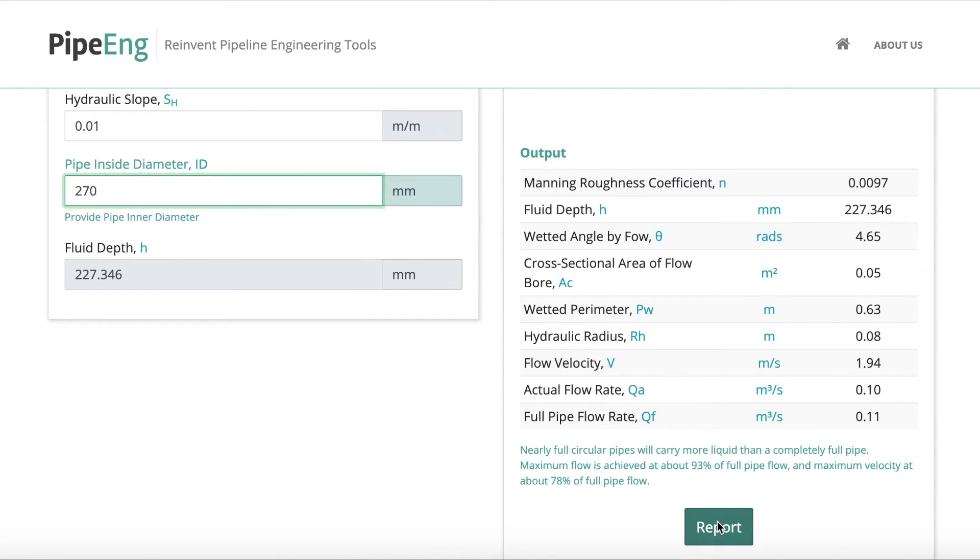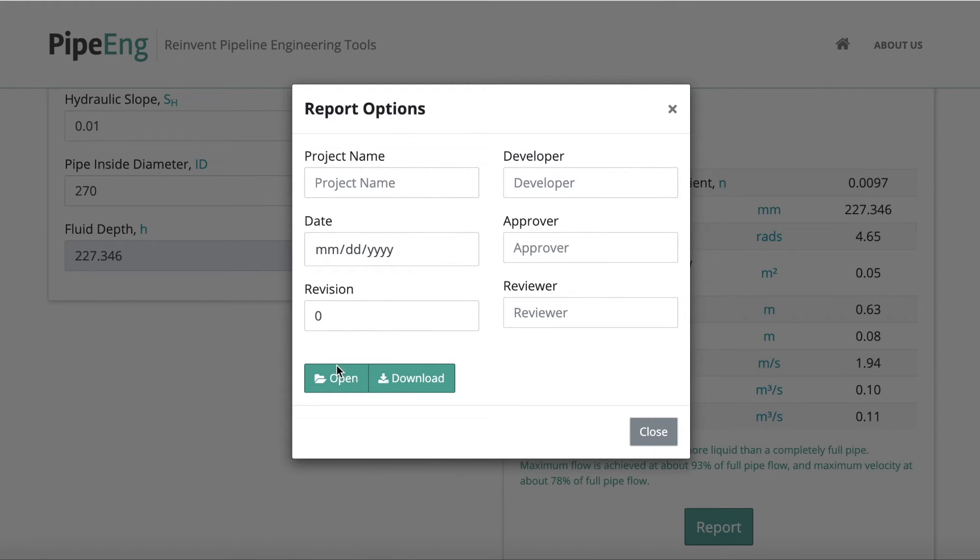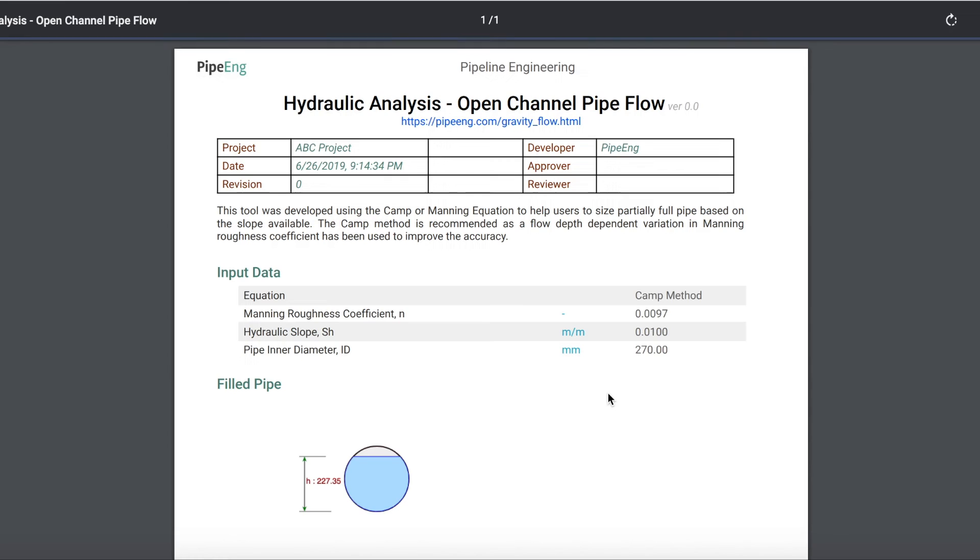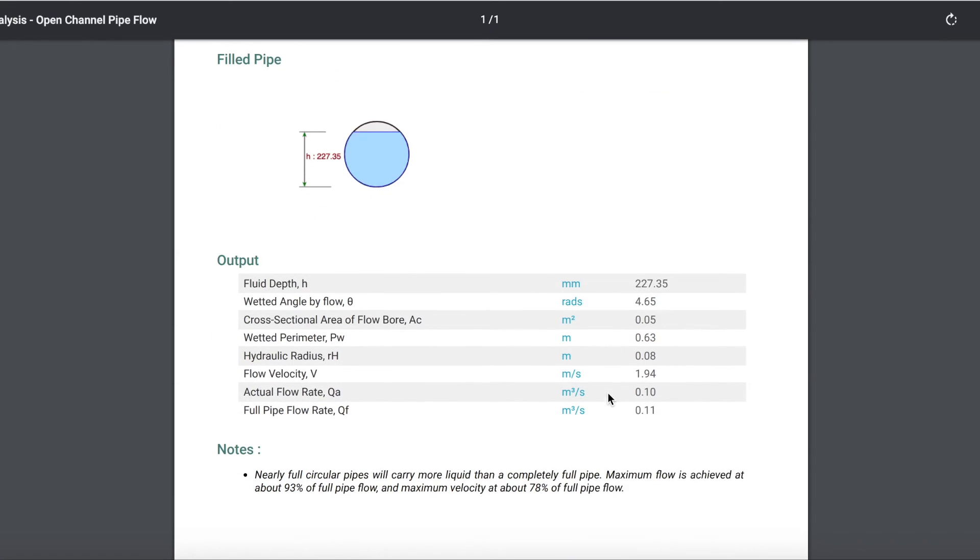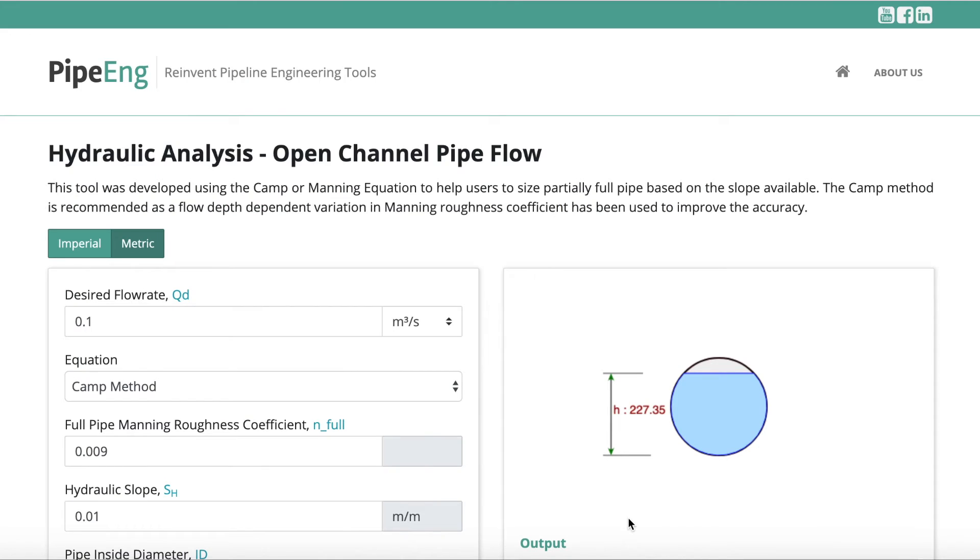Okay. At the same time, if you generate a PDF report, everything should be in metric units right now. Okay, that's everything about this tool. If you have any suggestions or questions, please leave us a message through our website. Our website is www.pipeeng.com. Thank you.